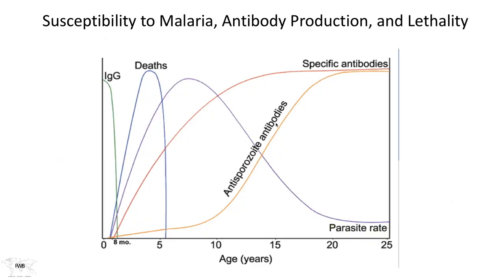We're now going to discuss host responses to the parasite that result in the production of protection. What we see here is a schematic of data collected from around the world which summarizes the effects of maternal antibody, shown as IgG in green, on the susceptibility of the newborn to infection and its rate of mortality associated with the level of maternal antibody.